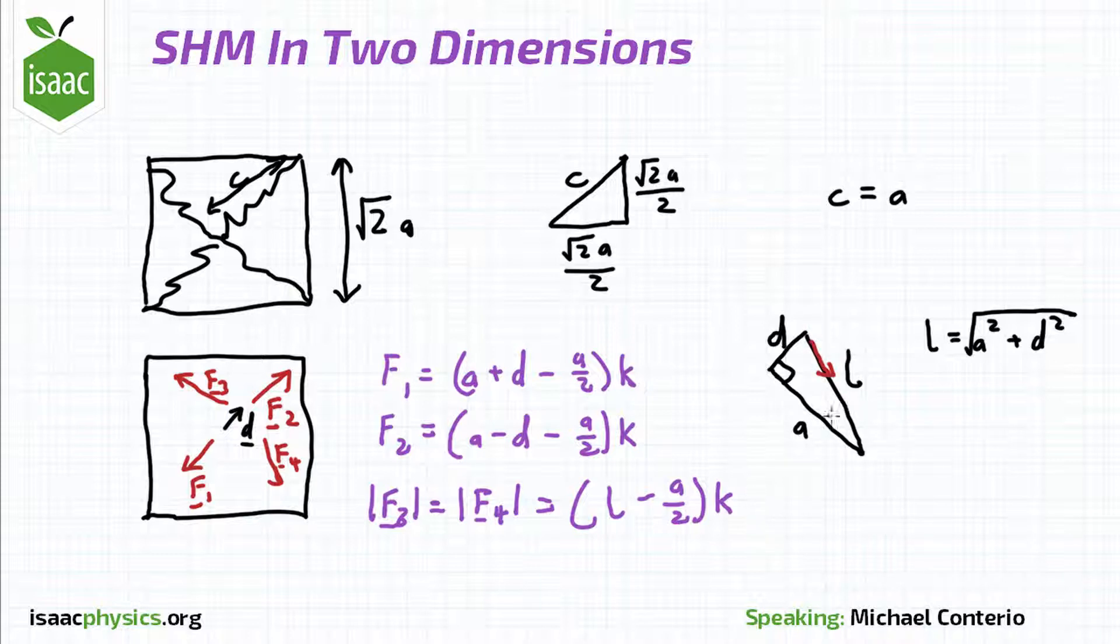Because those forces act along the spring as shown at an angle theta to the equilibrium position of the spring, we can write the components of these forces in the d direction equal to (l - a/2)k sin θ. We can see from this diagram that sin θ equals d over l.